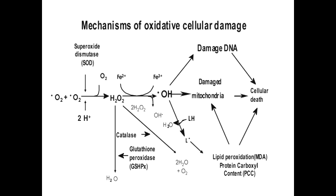What are some ways that free radicals can be eliminated from the body? Free radicals can be eliminated by enzymes such as catalase, superoxide dismutase, and glutathione peroxidase.